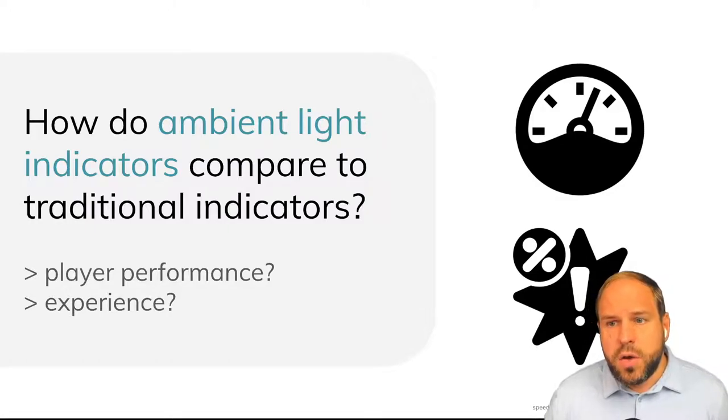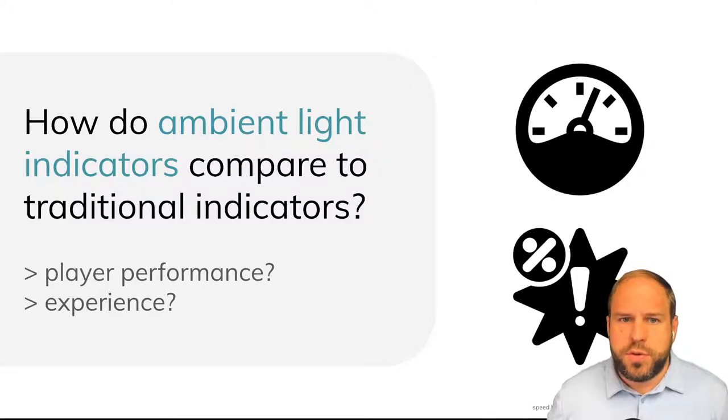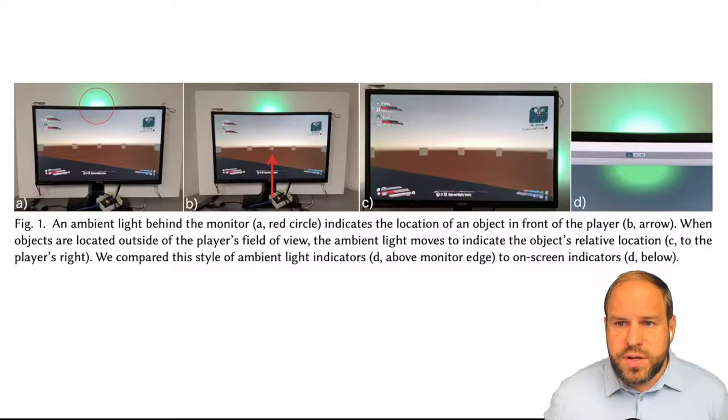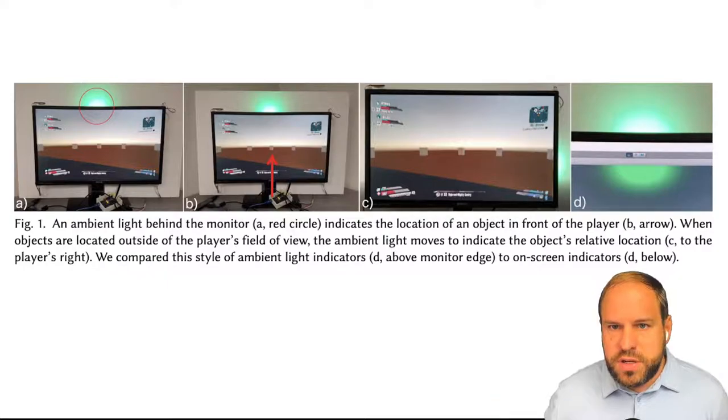So we asked the question, how do ambient light indicators compare to traditional indicators? And we created a control study that compares speed, error rate, perceived workload of this approach with an on-screen baseline method. And here you can see how that's actually broken down in our experimental conditions. We created a Unity program that emulates traditional indicator outputs in a first-person camera view in video games.